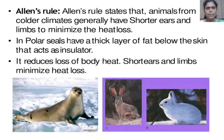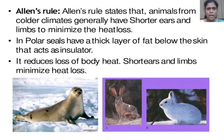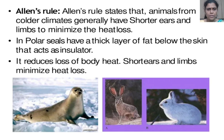Allen's Rule states that animals from colder climates generally have shorter ears and limbs to minimize heat loss. We see in the picture animals such as the sea lion and rabbits. Polar seals have a thick layer of fat below the skin that acts as an insulator and reduces loss of body heat. Short ears and limbs minimize heat loss.